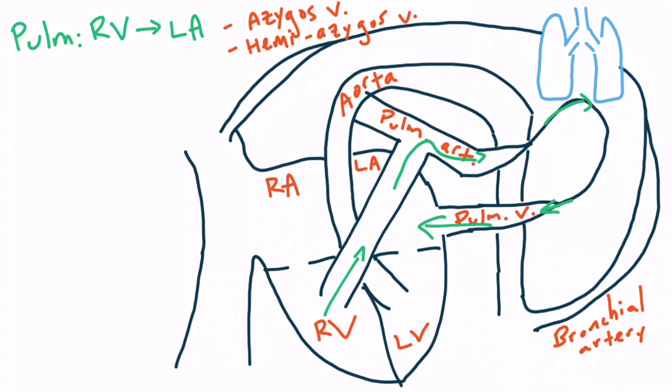Now let's talk about the bronchopulmonary circulation, which I'll show in orange. Blood leaving the left ventricle into the aorta is considered part of the systemic circulation because this blood goes to the various organs and eventually returns to the right atrium. However, a small portion of this blood eventually reaches the bronchial artery. This is an important blood supply to the lungs because it helps keep the non-alveolar tissue supplied with oxygen. Most of the blood in the bronchial artery empties into the pulmonary vein, which then returns to the left atrium.